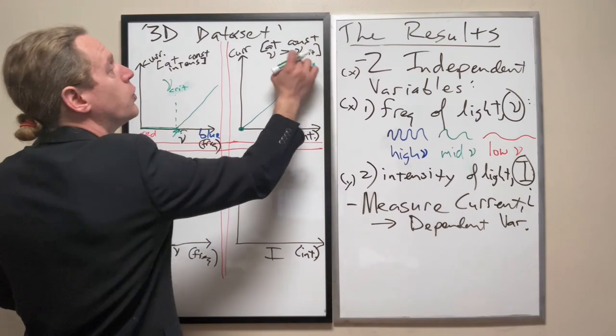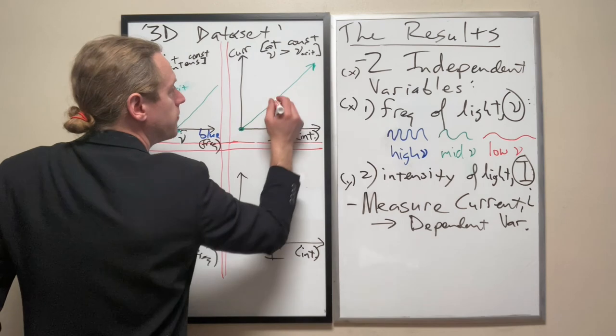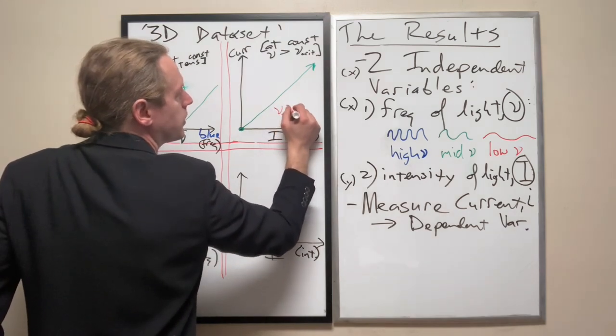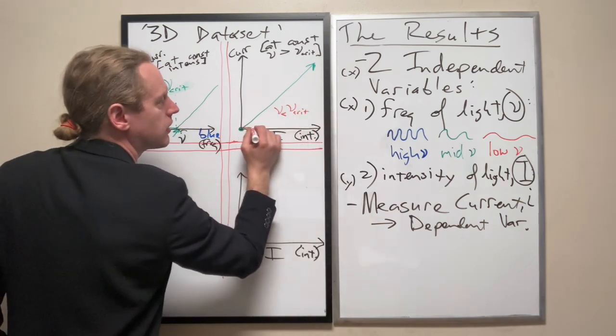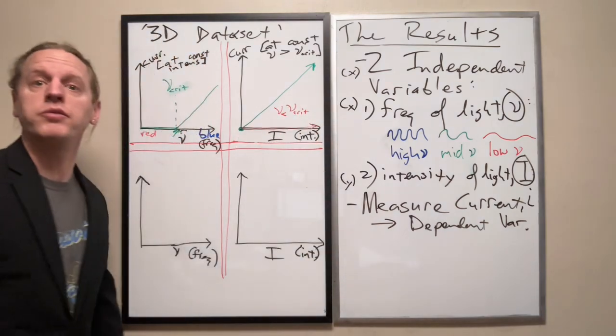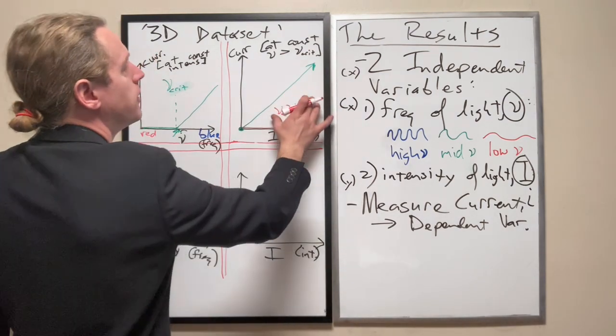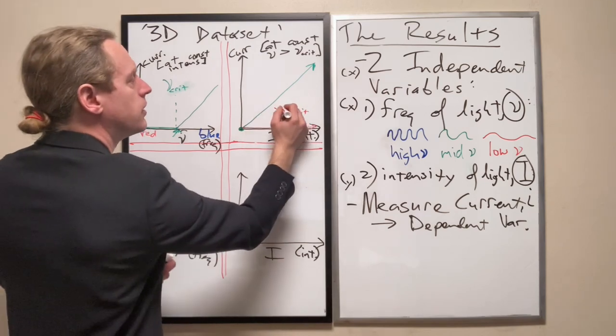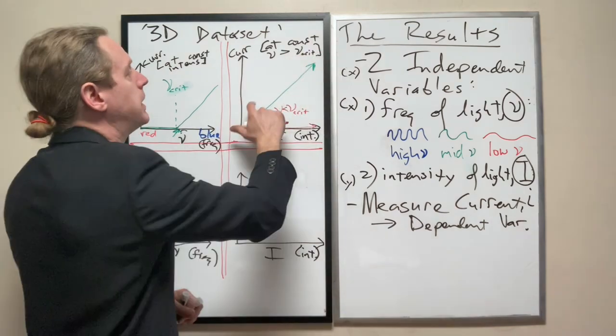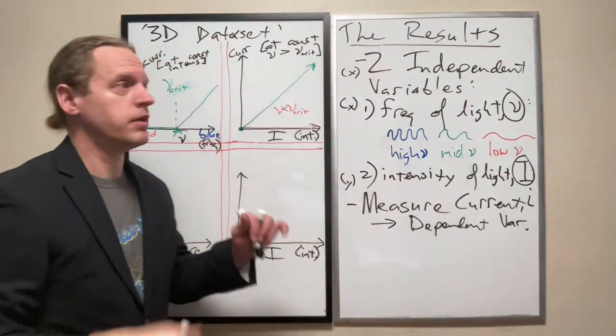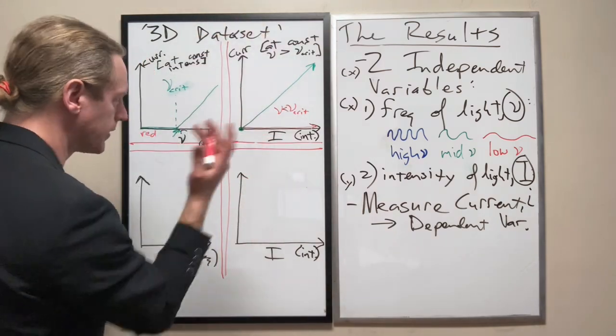Zero intensity gives us zero current. And as we increase that intensity, it's a linear response. Now, that's for nu greater than nu critical. If it's for less than nu critical, which I'll draw like this, for nu less than nu critical, or even equal to, because there's essentially no current there, you get something that looks like this. Zero at all times. And turns out, as long as that nu is greater than the nu critical, that every response looks the same, and every response has the same slope, to a given extent.